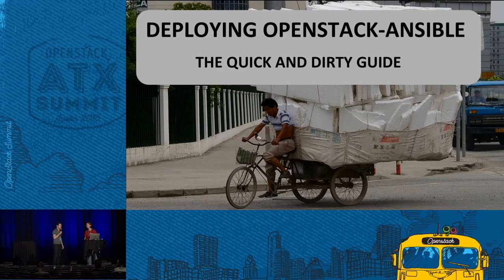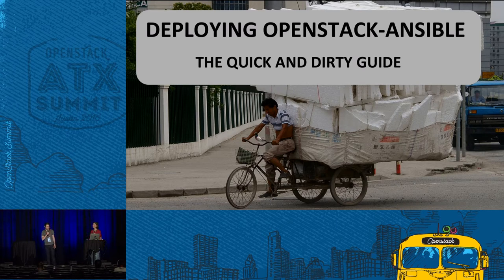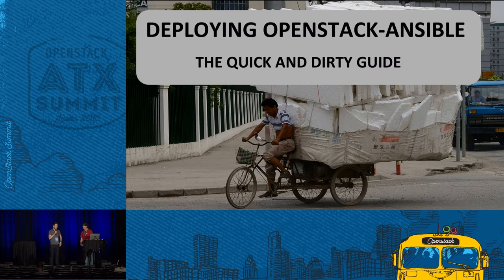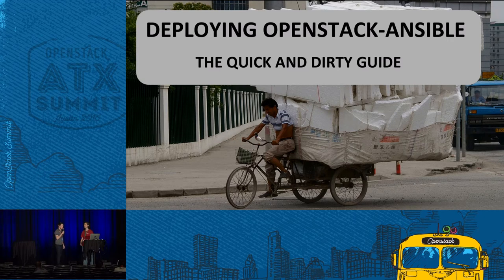Okay, looks like we're ready to go. I hope everyone's awake this morning — I know it was the party last night, so I'm impressed you all rocked up. My name is Andy McRae. I'm a software developer working in the private cloud team at Rackspace, and I work primarily on the OpenStack Ansible project, which is an upstream project.